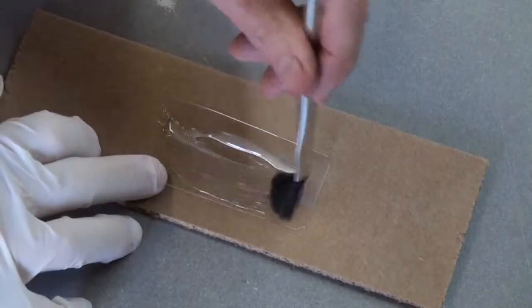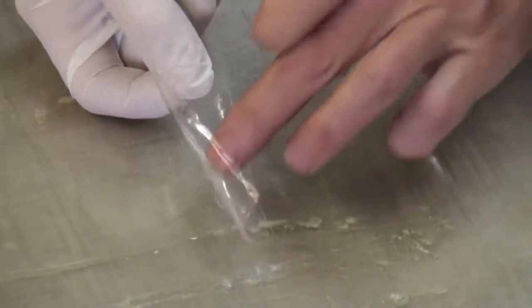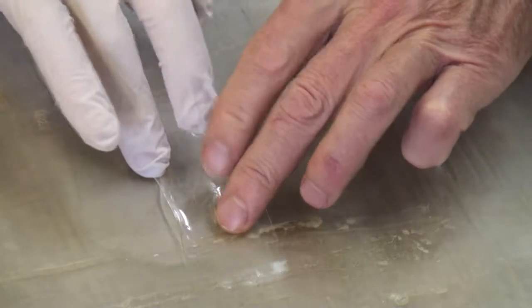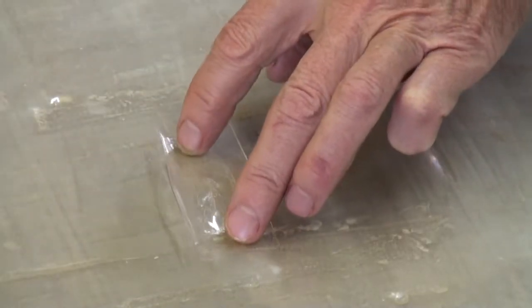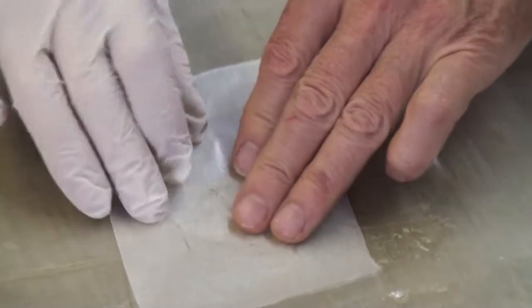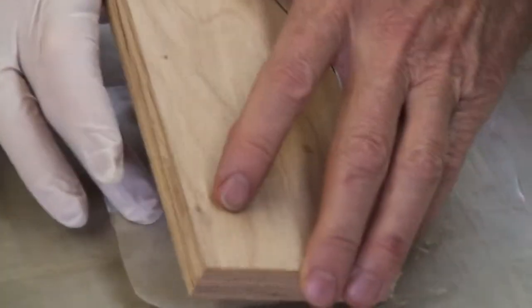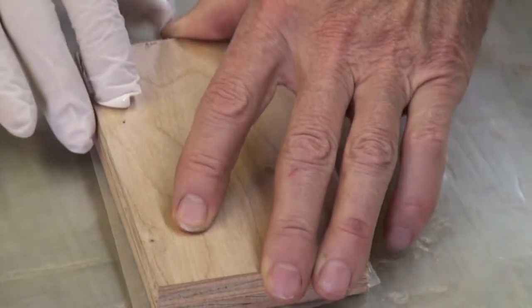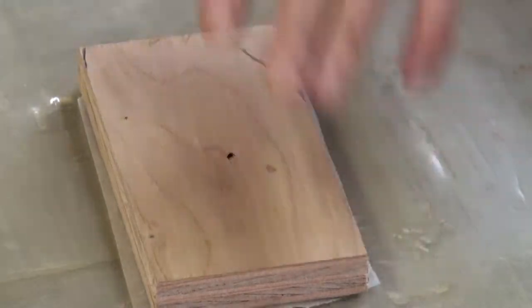Apply adhesive to the patch, place the patch on the bag, place a piece of wax paper on top of the patch, with a block of wood on top of this. Lastly, place some weight on the block to press the patch down firmly.